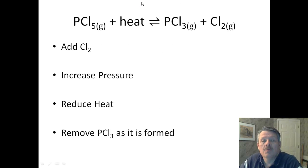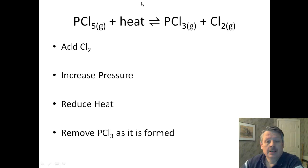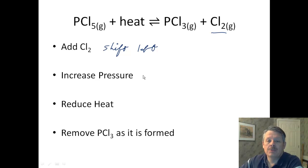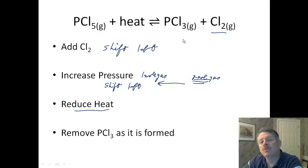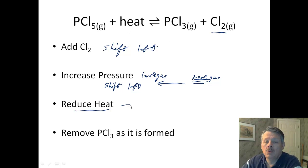Here's one where we put everything together — pause the video and see if you can tell me whether these things shift right or shift left. First one: we added chlorine gas, which is over here as a product, so we shift away from that — we shift left. We increase the pressure: on the left we have one mole of gas, and on the right we have two moles of gas, so we impact the right more and shift left. What happens if we reduce the heat? Heat is on the left side here, so if we add heat we move right; if we reduce heat we move towards it — we shift left.